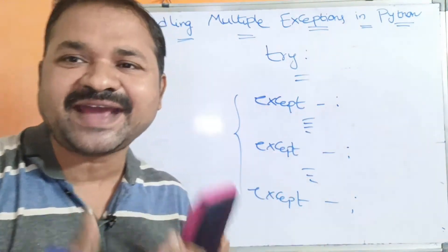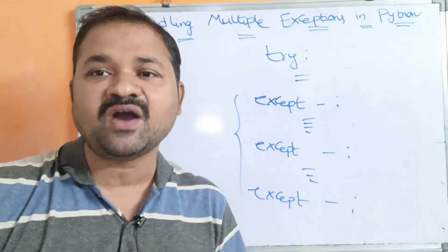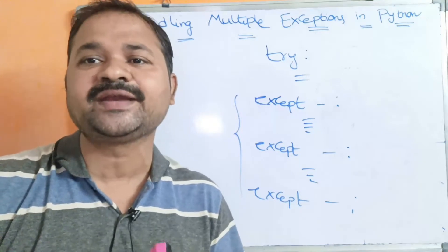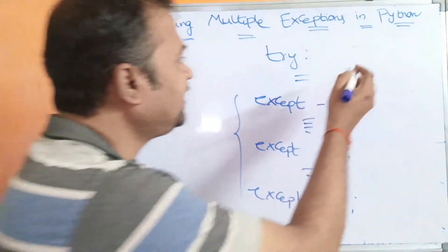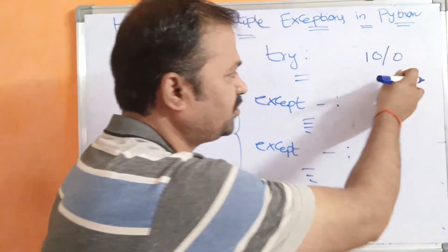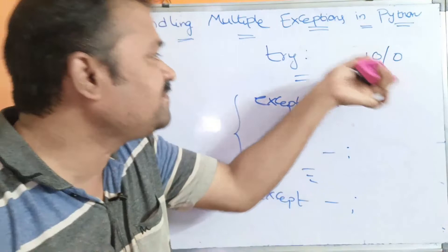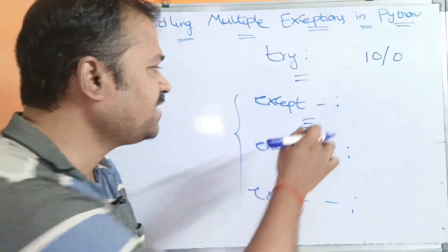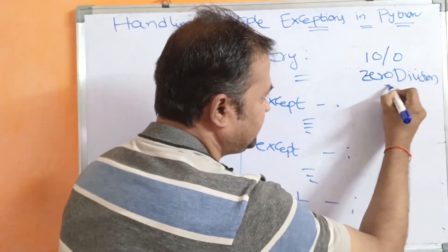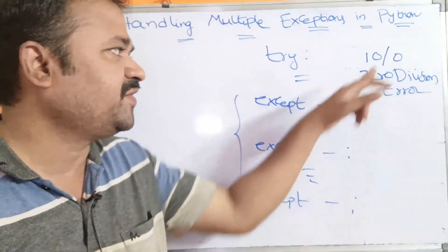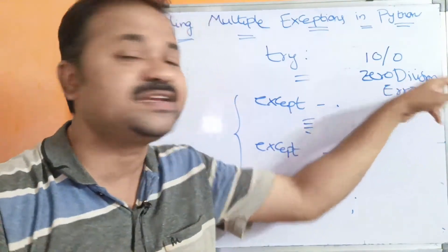There are different types of exceptions: ZeroDivisionError, IndexError, TypeError, ValueError, NameError, AttributeError, and others. For example, if the denominator is 0, a ZeroDivisionError exception is caused, and the control goes to the except block with the ZeroDivisionError class.